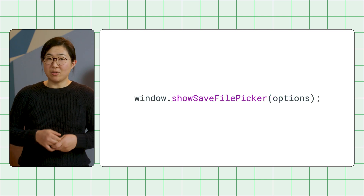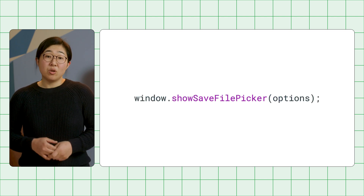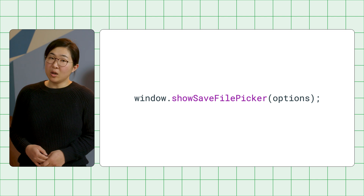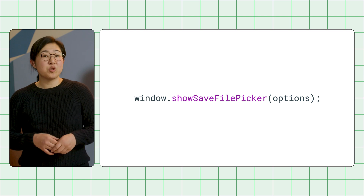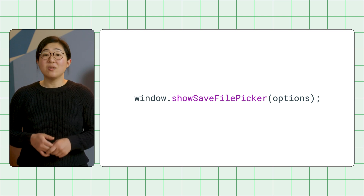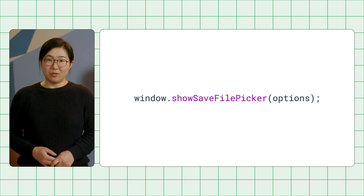To save a file to disk, you can use the same file handle you got earlier, or call showSaveFilePicker to get a new file handle.